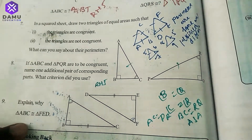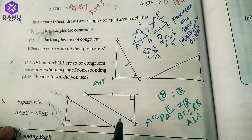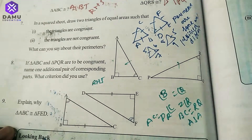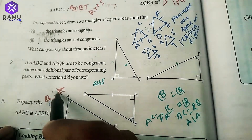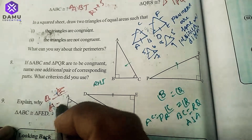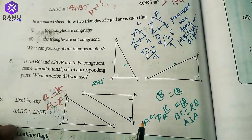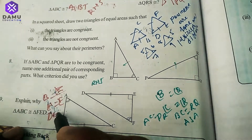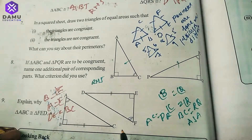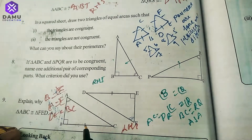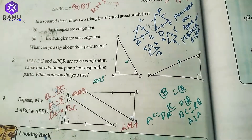Explain why triangle ABC is congruent to triangle FED. Angle B = angle E, angle A = angle F, and BC = DE. So by the AAS congruency rule, the triangles are congruent to each other. Thanks for watching this video.